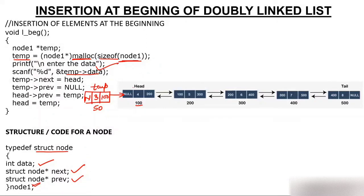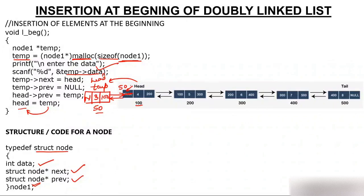Now head->previous will store the address of the new node, so head->previous = temp. What is temp? It's 50. So instead of null, the previous field of the old head node now has 50, meaning it points back to the new node. Finally, head = temp, meaning head now holds 50. Head jumps from the old first node to this new node. The new node is now the head.